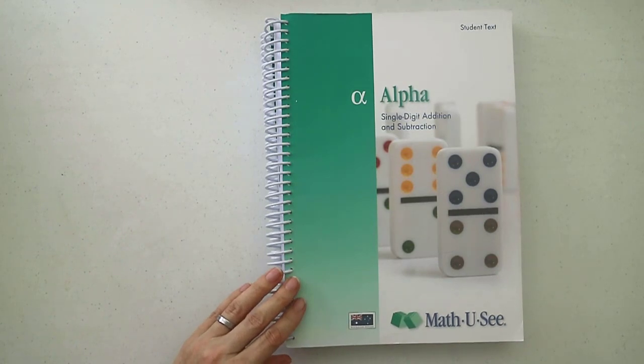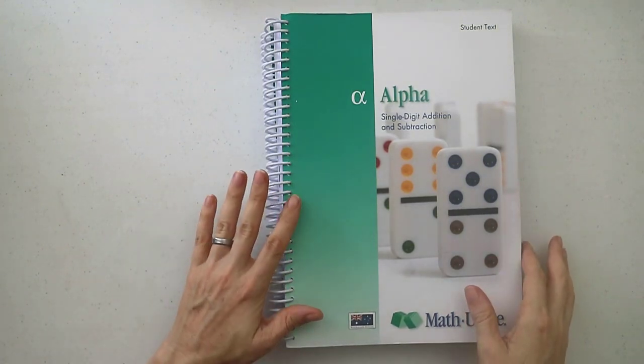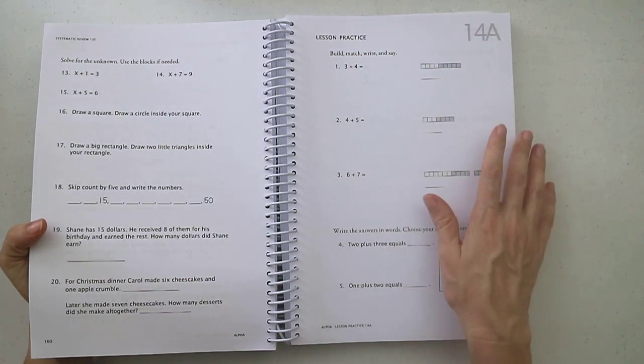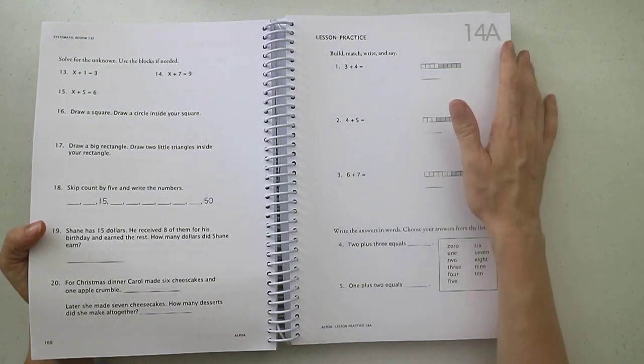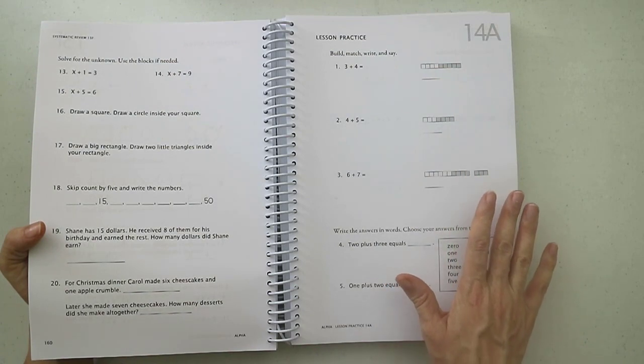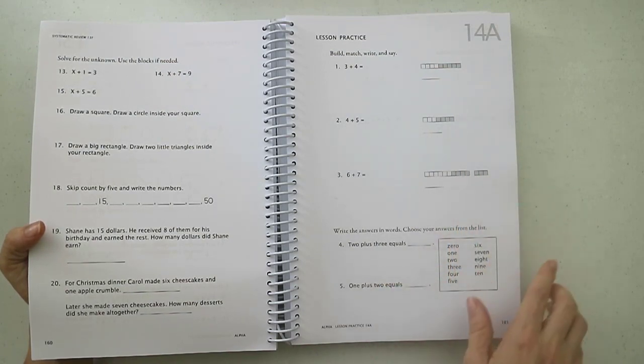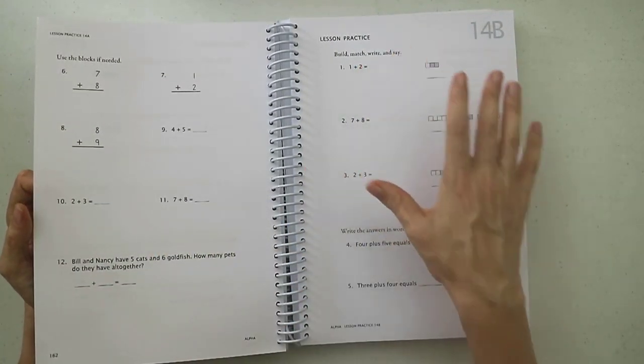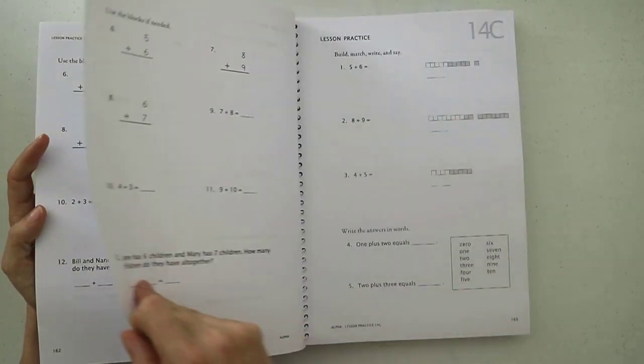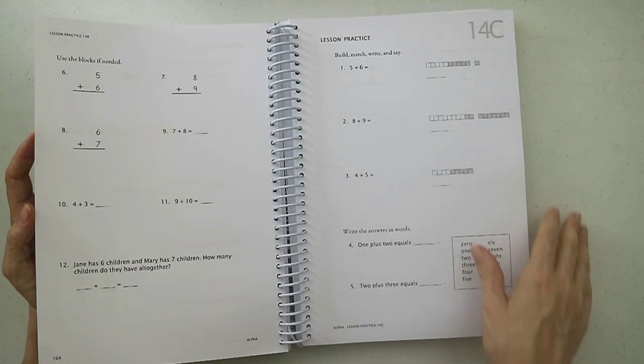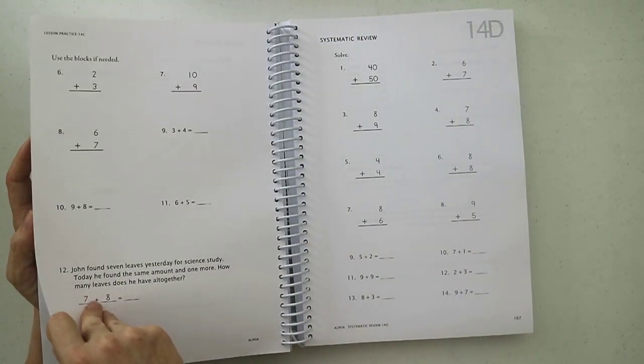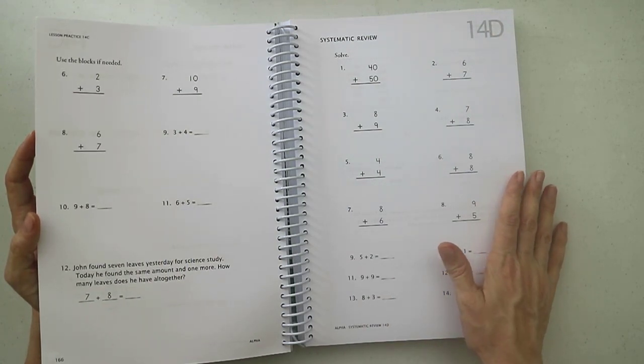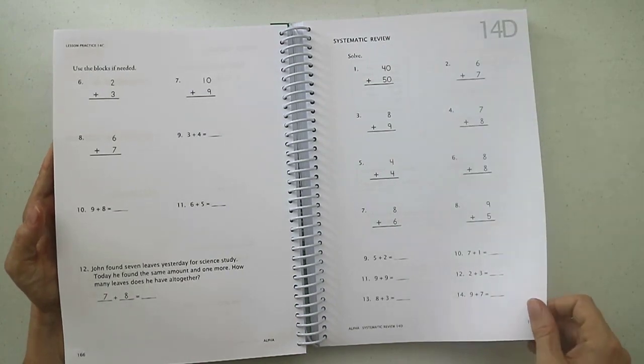Next up is the student text. These follow a bit of the same format through all of the levels. Basically open it up and you start off with A for that week. After lesson 14 here, you start off with A which is a review of the concept that you've learned in that lesson. You see here they're quite straightforward: build it, match it, write it, and say. You do the answers with words, you do the other sums. C is also lesson practice, so A to C is lesson practice. Then D, E, and F is systematic review. Systematic review goes over concepts that have been learned in previous lessons and even in previous books once you get onto the later ones.